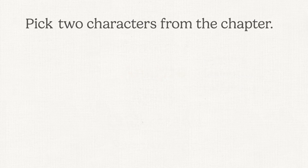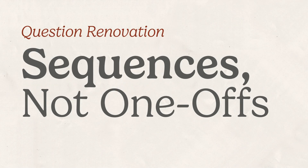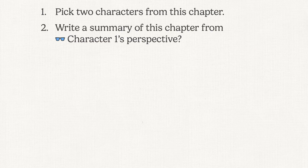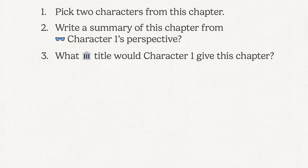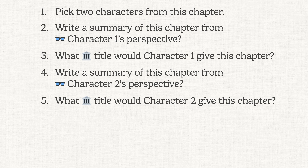My first draft might look like this: Pick two characters from the chapter. How would they title the chapter differently based on their experiences? I like the direction, but I never want to ask a one-off — I want to create a scaffolded sequence. So I might start by picking two characters, then ask students to summarize the chapter from one character's perspective. How might that character title this chapter? Then we'll do the same for the other character — how would they summarize the chapter, and then what would they title it?